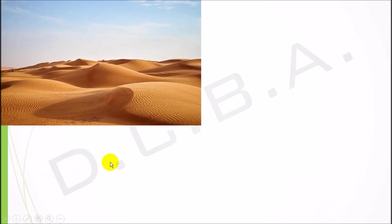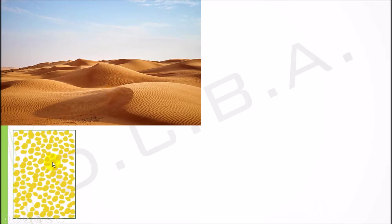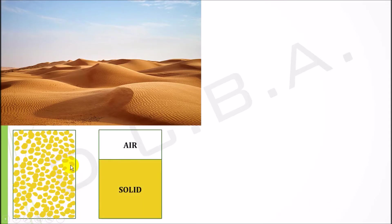Let's see one more example. Consider a desert — if you take sand from the desert, will it have water? No, it won't have water. The soil would consist only of solids and air, so the diagram converts into a two-phase diagram where water is absent, because this is a dry desert sand.